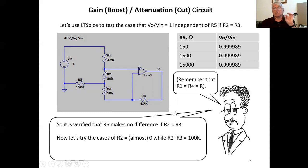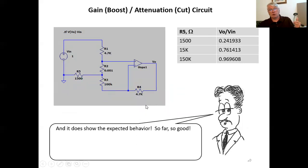Now let's try some cases where r two is almost zero, while r two plus r three is 100k. SPICE won't allow me to enter a value of zero for a resistor, but I can enter something like 0.001 ohms. So let's do that. And we expect under those cases the voltage gain would go to r five over r plus r five. So let's see if r five is 1500 ohms, which is the nominal value I show here, we expect the gain to go to 1500 divided by that would be 6200, which would be gain of about 0.24. So let's see what happens. So with 1500 ohms, 0.24 and as r five rises, it gets larger and eventually as r five gets very large, it closes in on one. It does show the expected behavior. So far, so good.